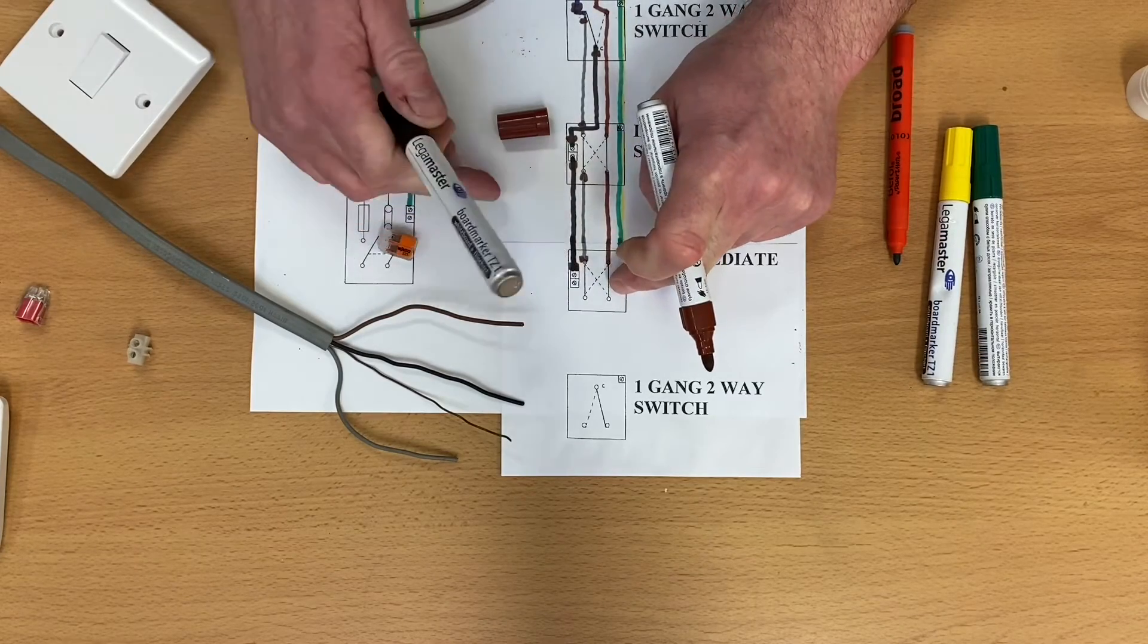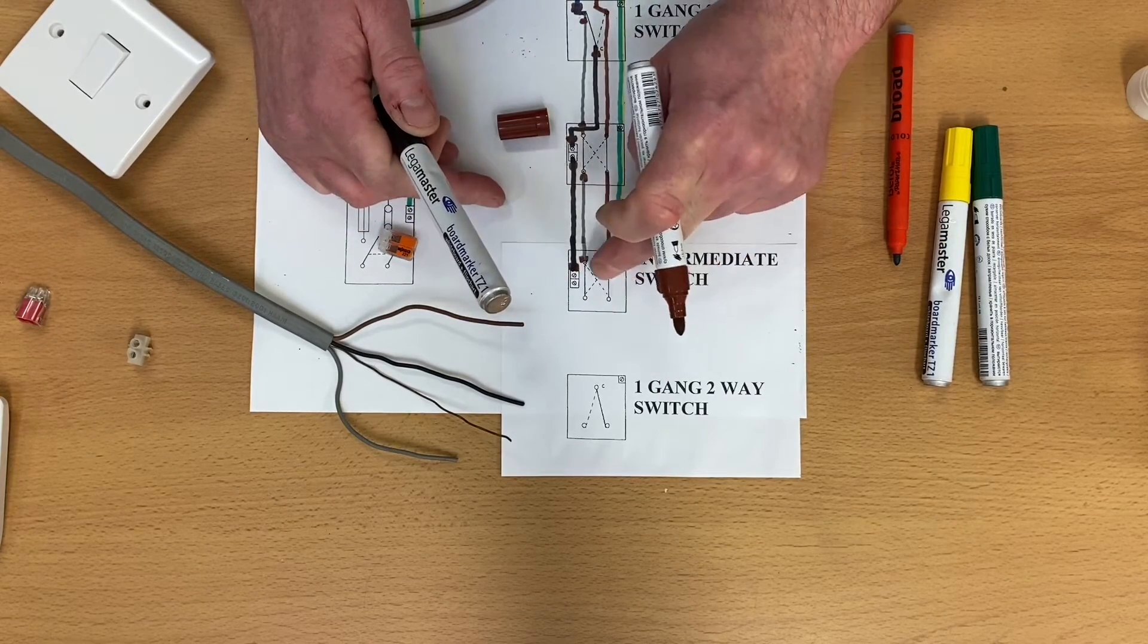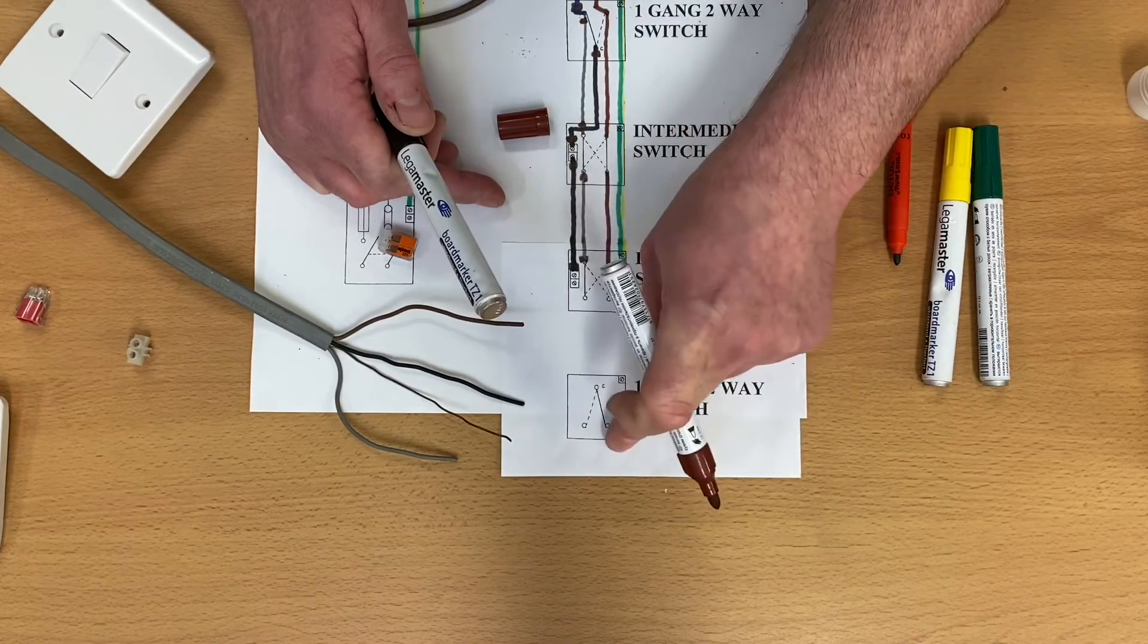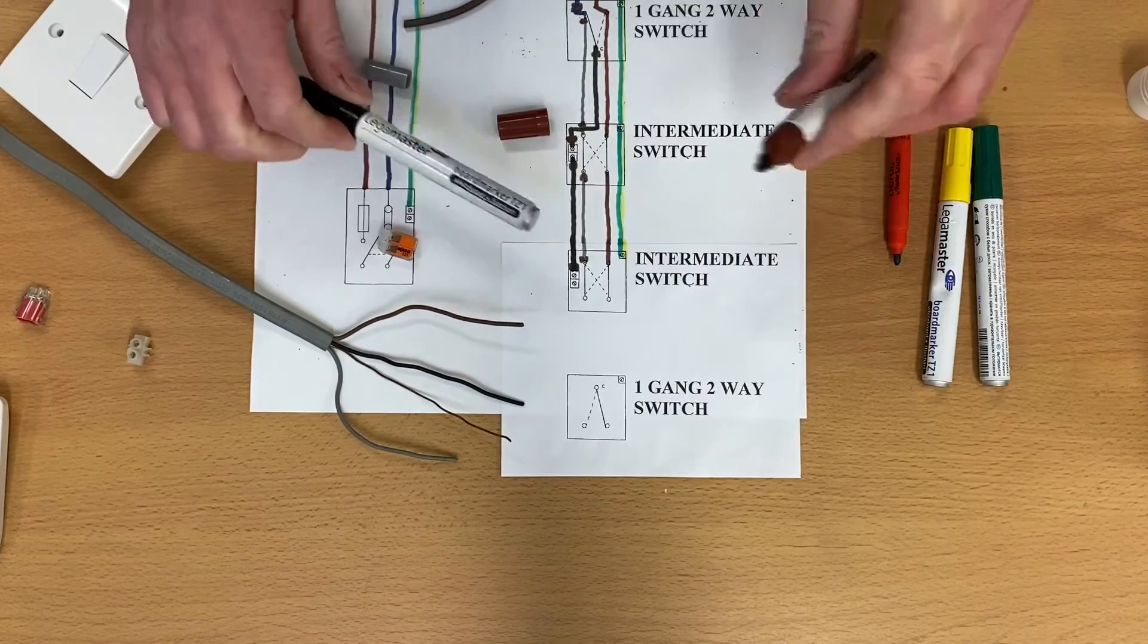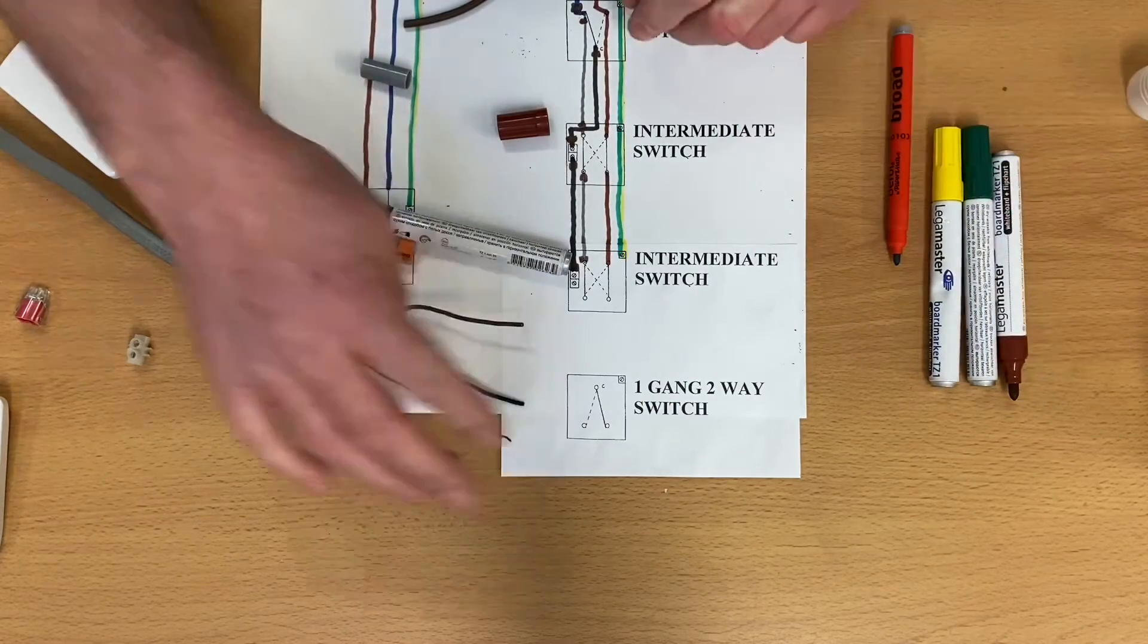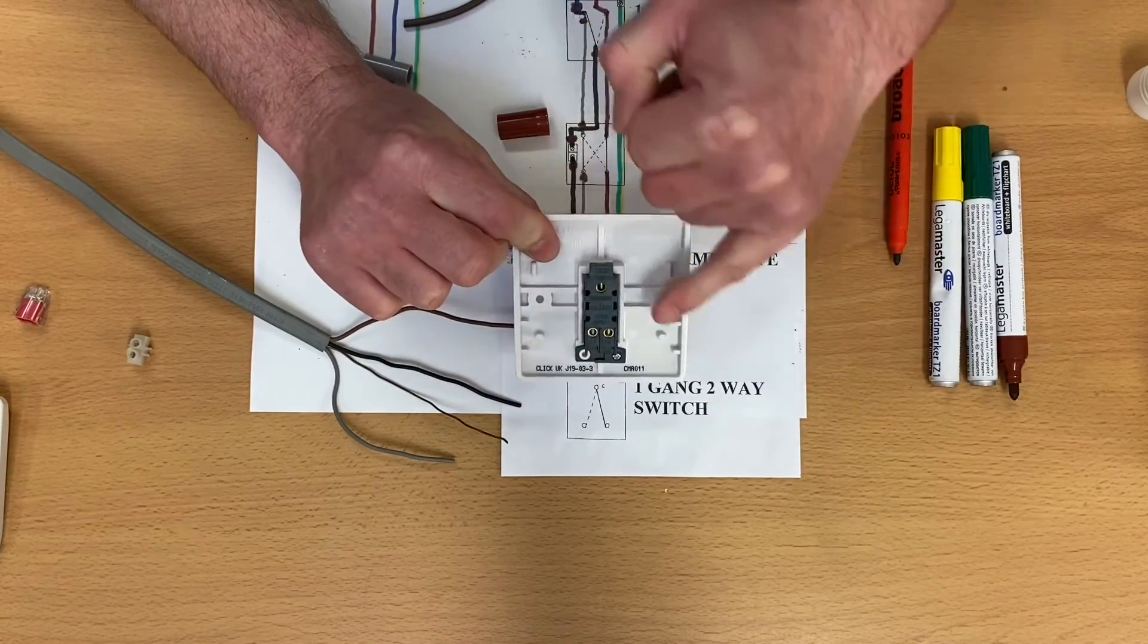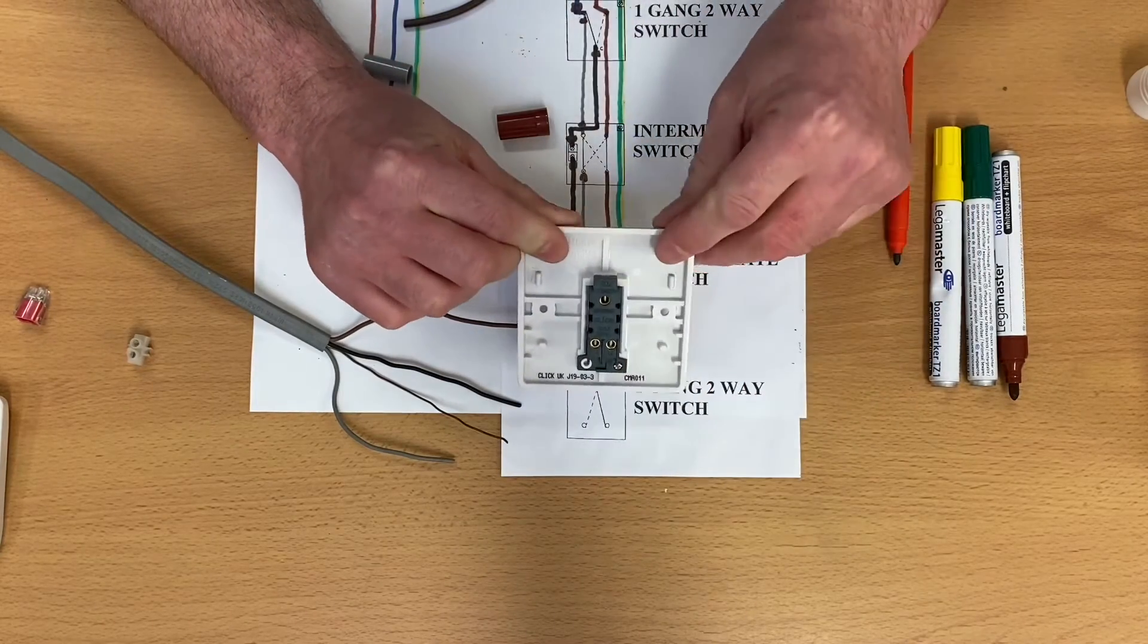So that was the three-core cable that we had originally that was in the switch under here, which was two-way, which is now an intermediate switch. We now wire into our fourth switch, and that's where we're ending it. So we know the last switch and first switch in two-way and intermediate needs to be a two-way switch. So we've got a two-way switch down here, like so. So we've got our two-way switch, common L1 and L2, or variants on that.